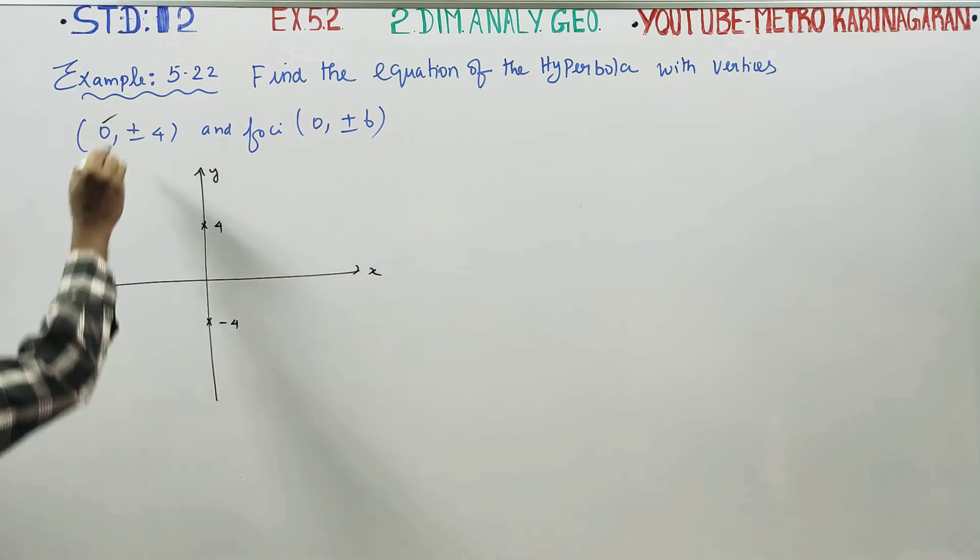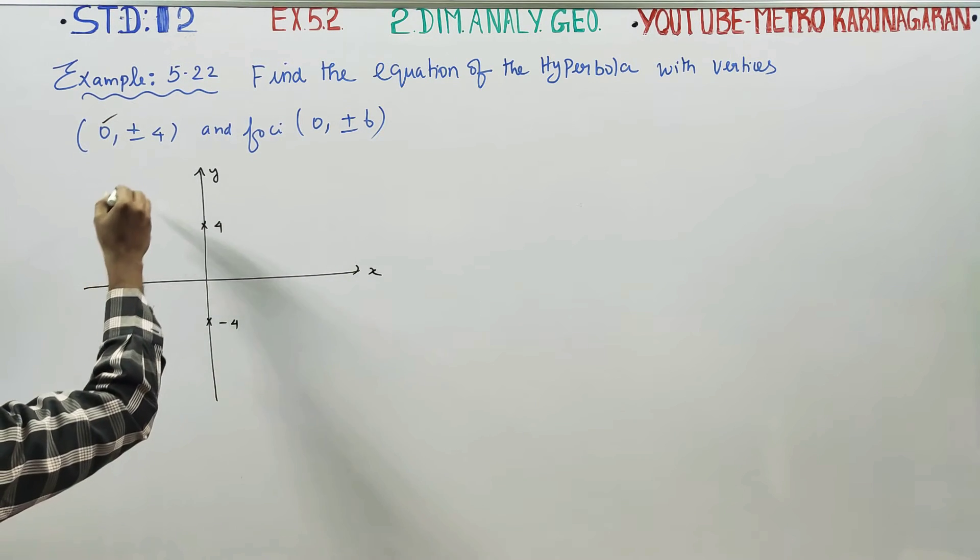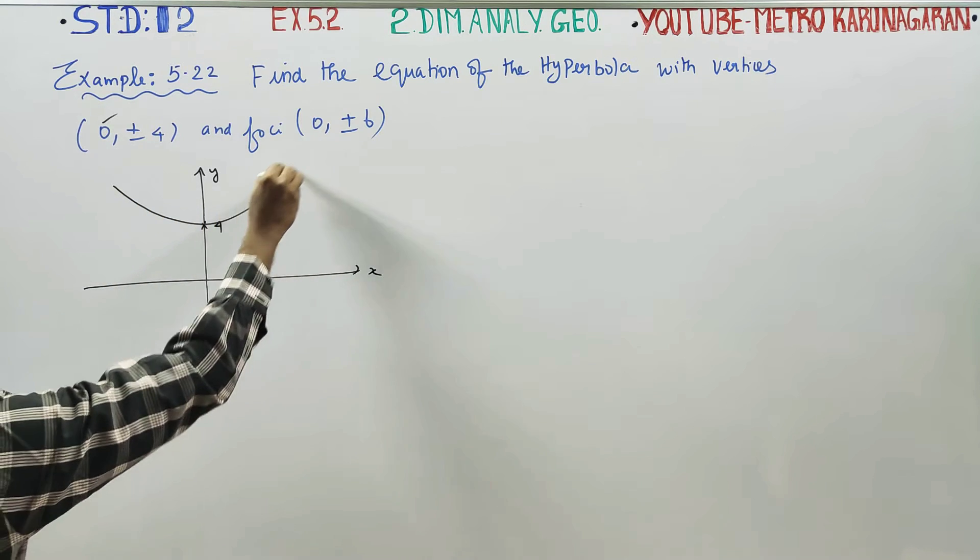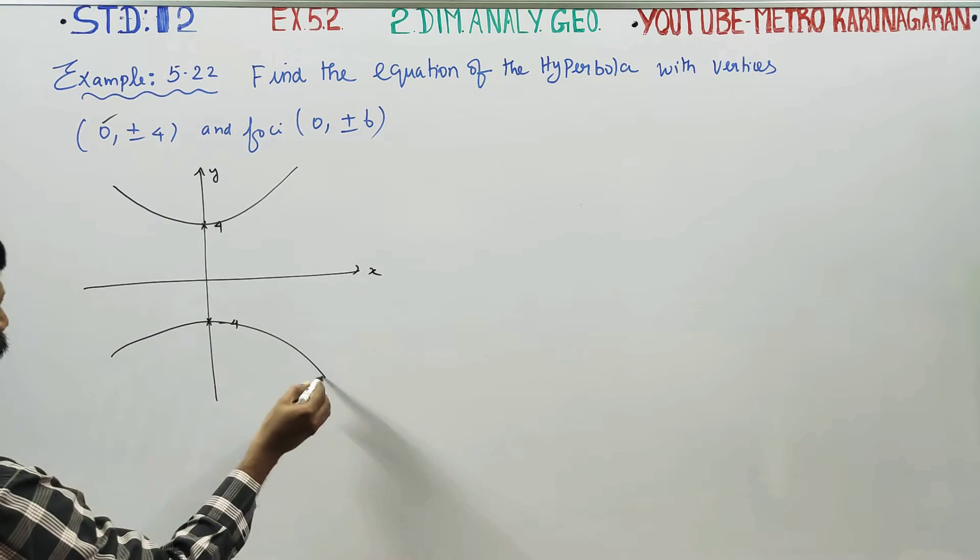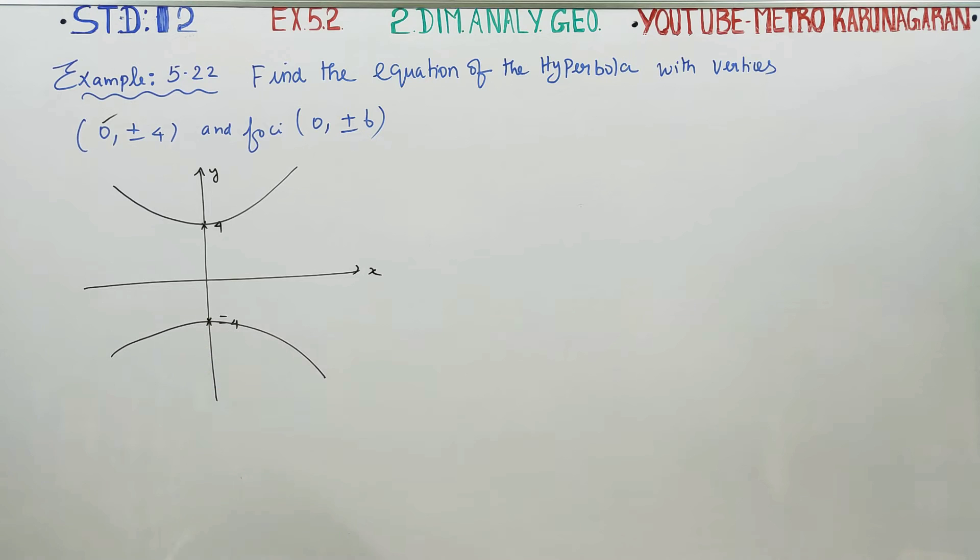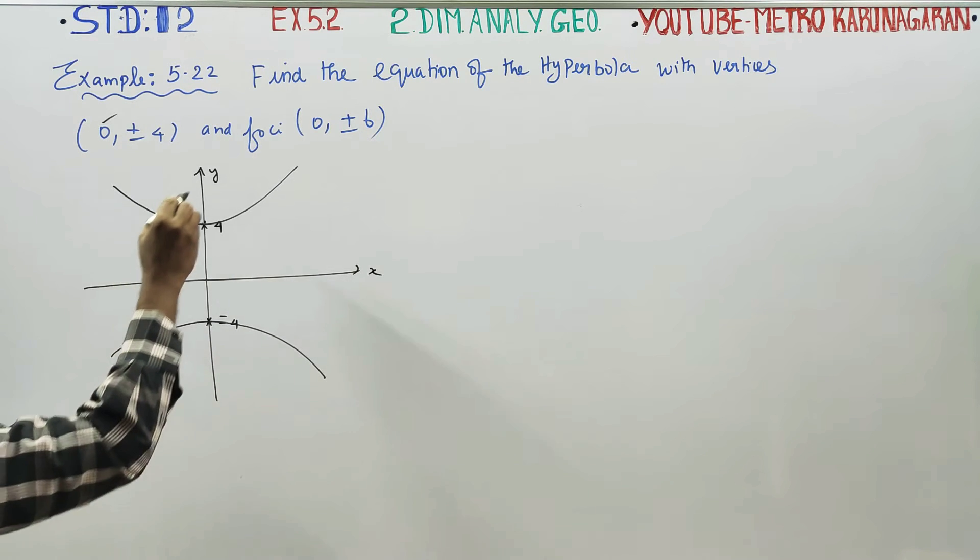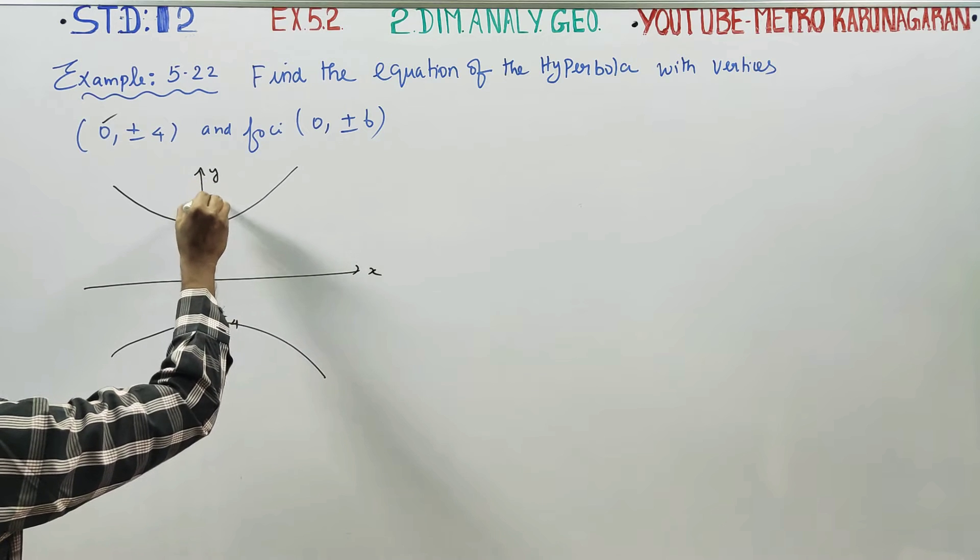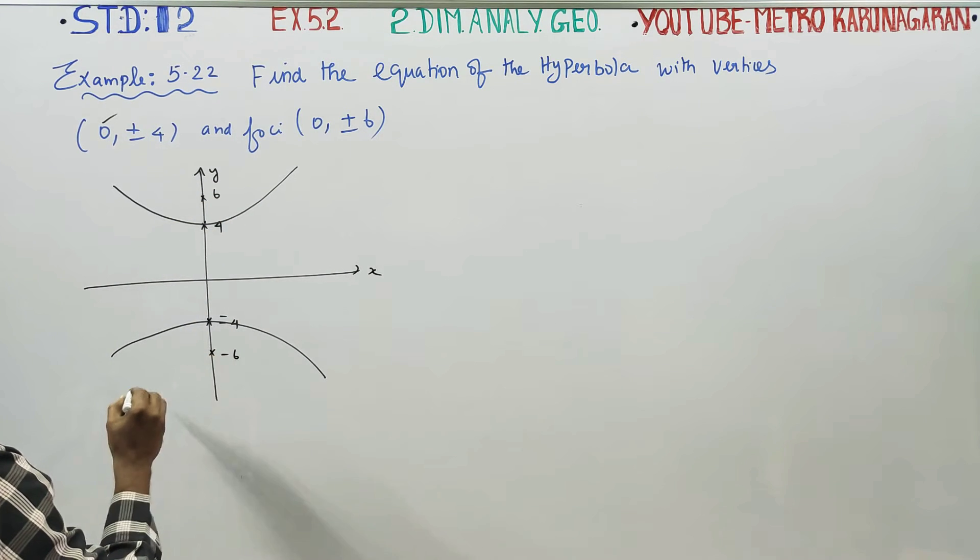And now, we have x is 0 and it is on the y-axis. My hyperbola passes through plus 4 and minus 4. Focus is plus or minus 6. That's why we have plus 6 and minus 6. This is all on the y-axis.